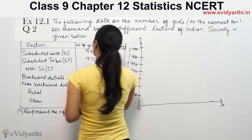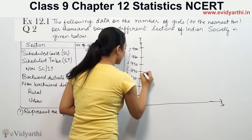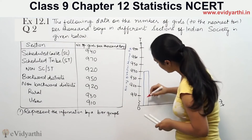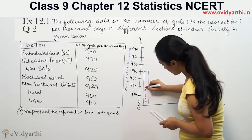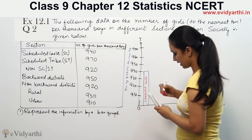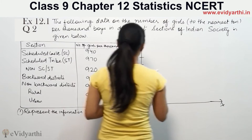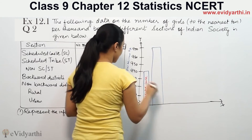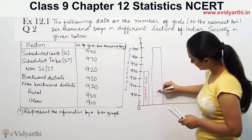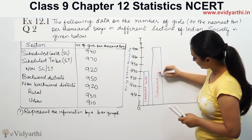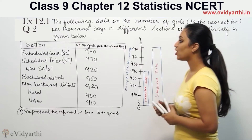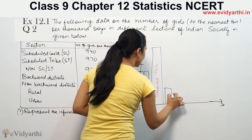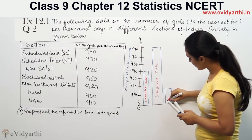940 — now SC is 943, so the first bar is drawn at approximately 940. This is Scheduled Caste. Then ST is 970, so the next bar is at 970. This is Scheduled Tribe. Then non-SC/ST is 920, and the bar is drawn at 920. This is non-SC/ST.